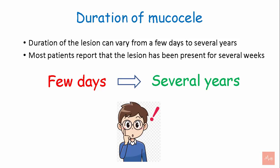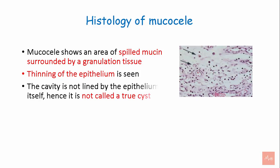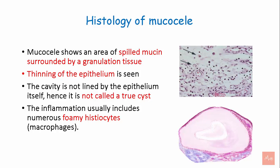Histology: A mucocele shows an area of spilled mucin surrounded by granulation tissue. Thinning of the epithelium is seen, and the cavity is not lined by epithelium itself. Hence, it is not called a true cyst. The inflammation usually includes numerous foamy histiocytes or macrophages.